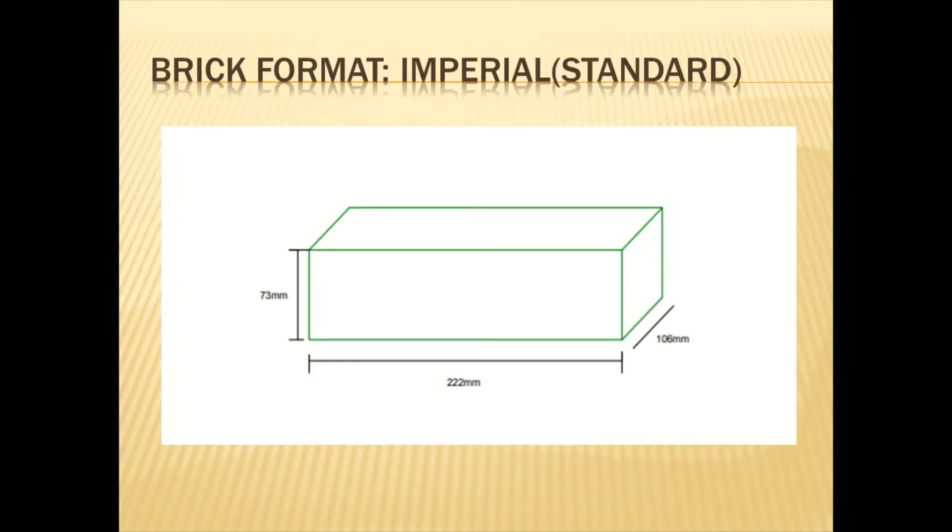Now, for the size of the brick, we are going to be using standard imperial brick size, which is made up of 222 millimeters by 106 by 73 millimeters. Another important thing that we need to note is that an assumption of 10 millimeters for the joint size has been made.